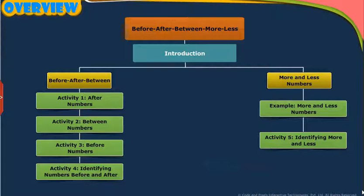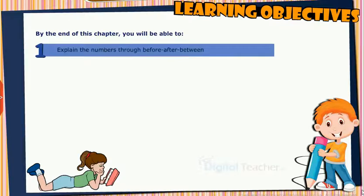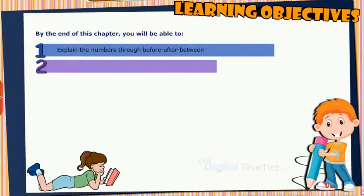This slide presents the overview of the chapter. Learning Objectives: By the end of this chapter, you will be able to explain the numbers through before, after, and between, and identify the differences between more and less.